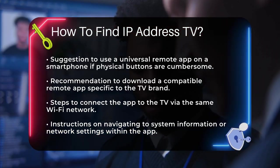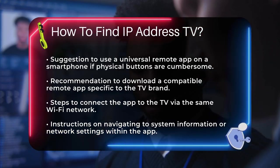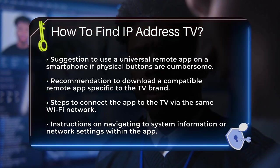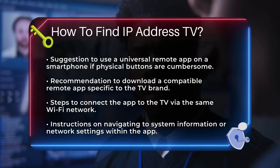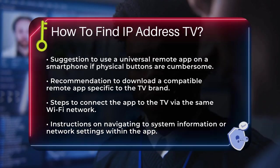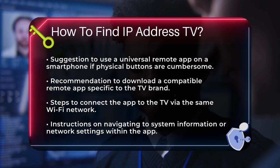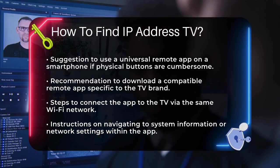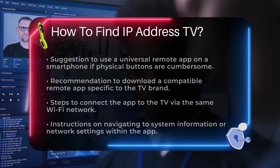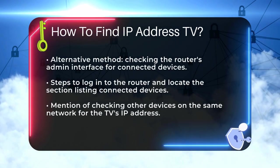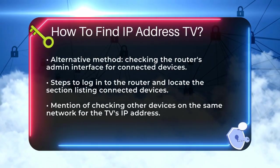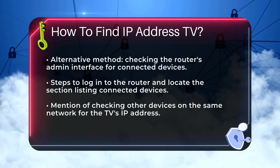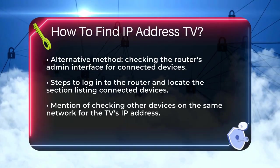Another method is to check your router's admin interface. Log in to your router by typing its IP address in a web browser on a connected device. Look for a section that lists all the devices connected to the network along with their IP addresses. Your TV should be listed here, and you can find its IP address next to its name.